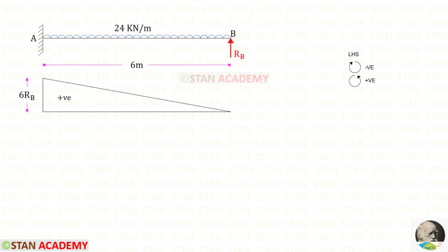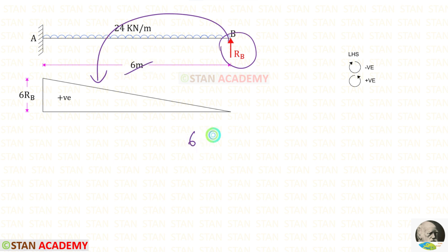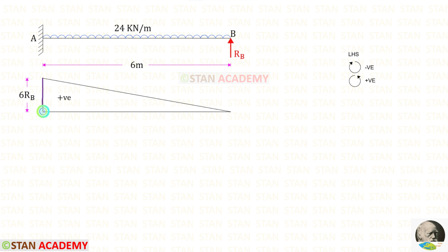First, let us take Rb. It is acting in the anticlockwise direction so that it will be positive, and the distance is 6. Therefore, the moment is 6Rb. The diagram will be in the shape of a triangle.